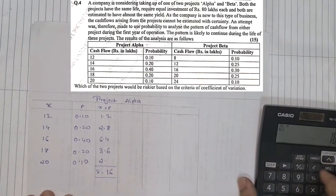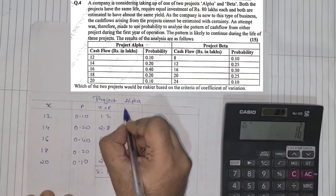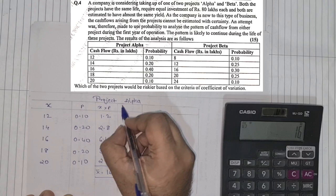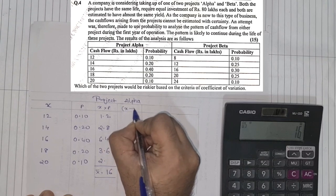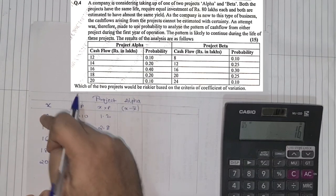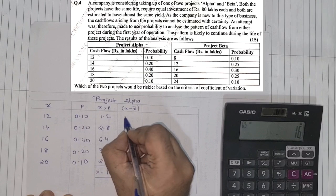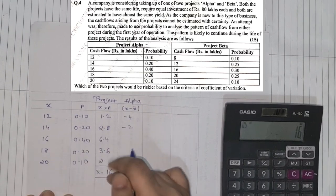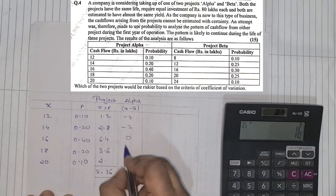Next column, now what we require will be each value of X minus X bar. So it will have X minus X bar. So 12 minus 16 is negative 4, 14 minus 16 is negative 2, 16 minus 16 is 0, 18 minus 16 is 2, 20 minus 16 is 4.